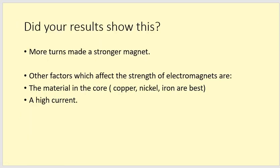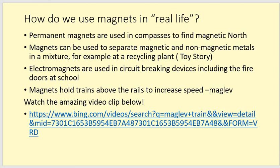Now, this is what your results should have shown, and there are three other things that can, two other things that can affect the strength of a magnet. The material in the core, the core is the proper scientific name for the nail, copper, nickel, and iron are the best, work out why from what we did earlier. A higher current. Now, we're only using a battery because it's safe to use in our hands.